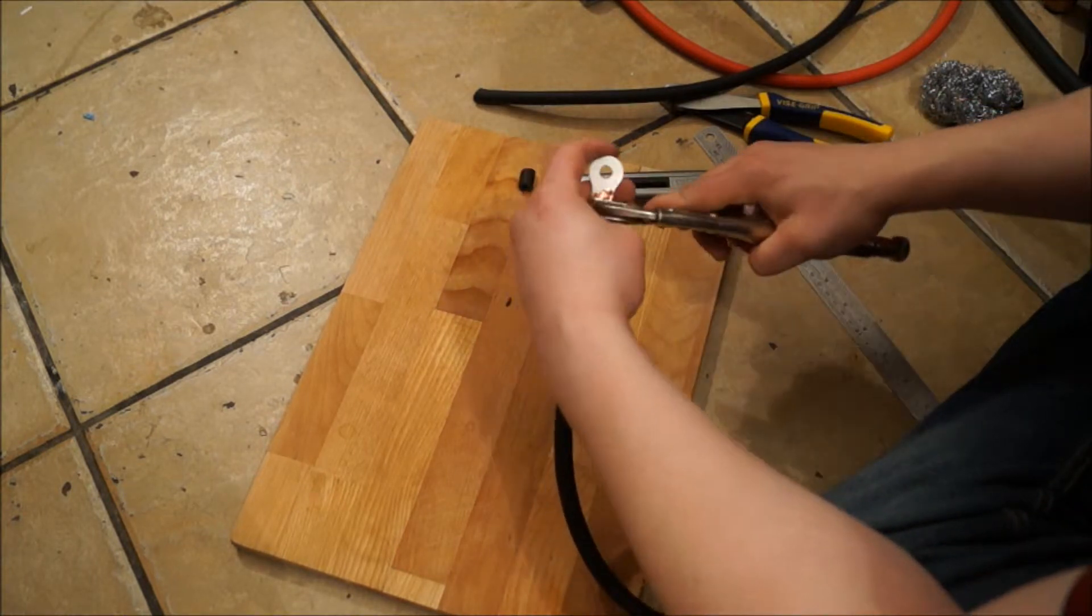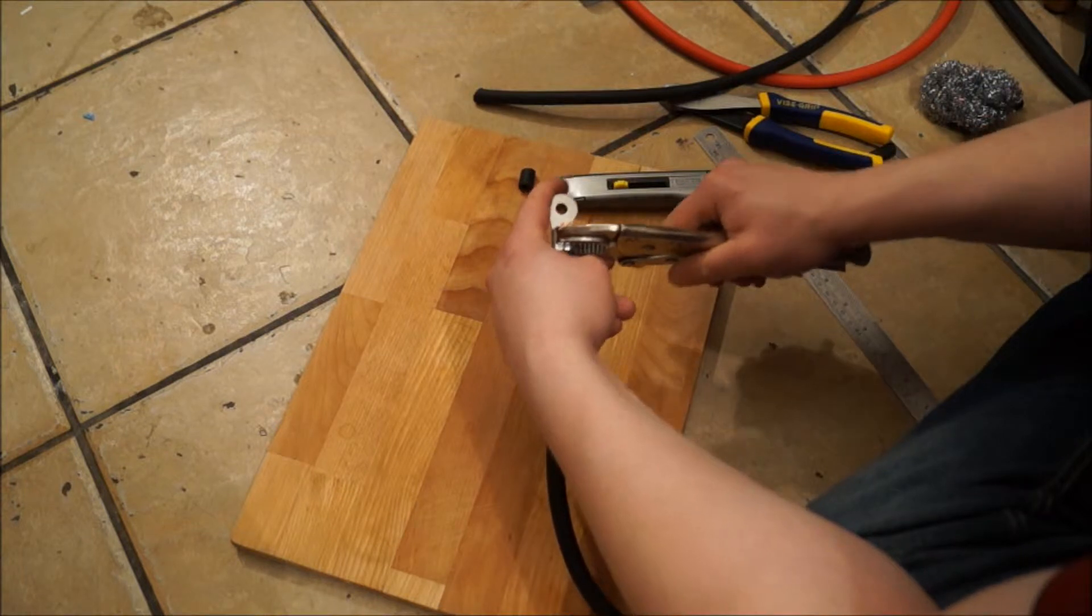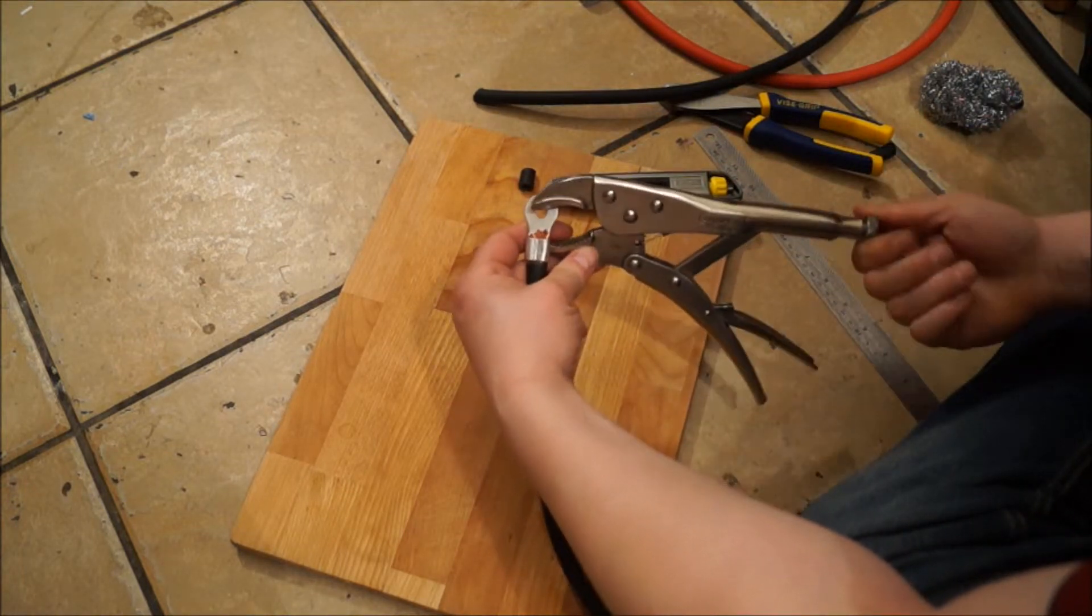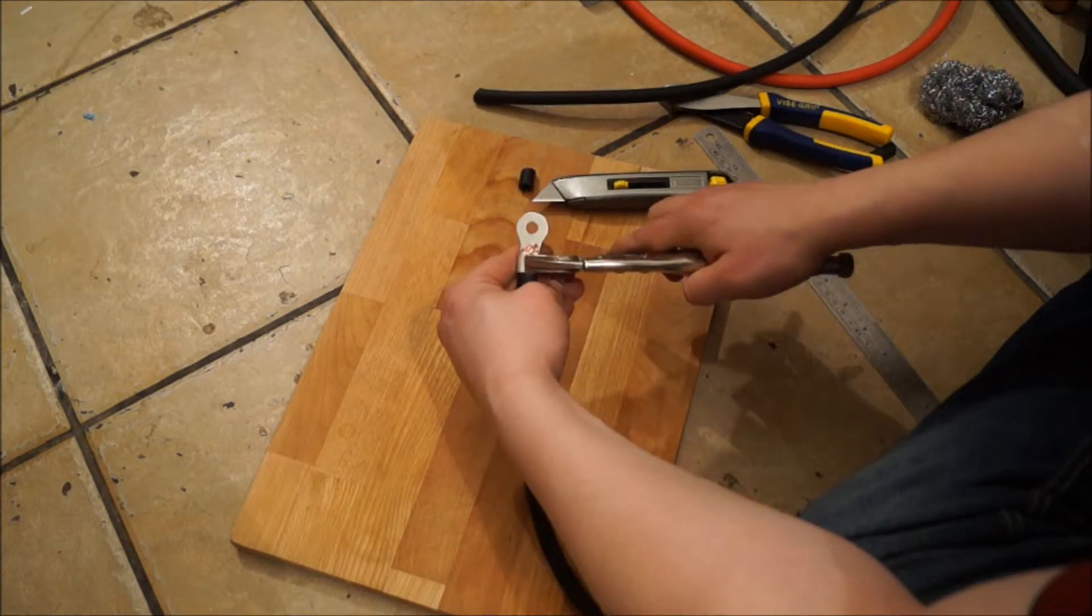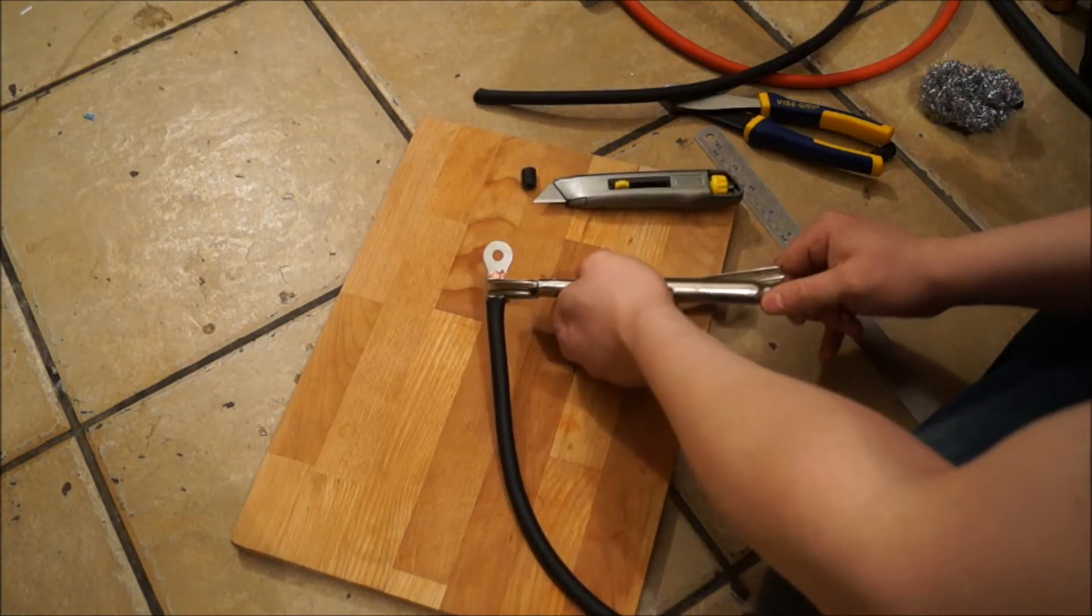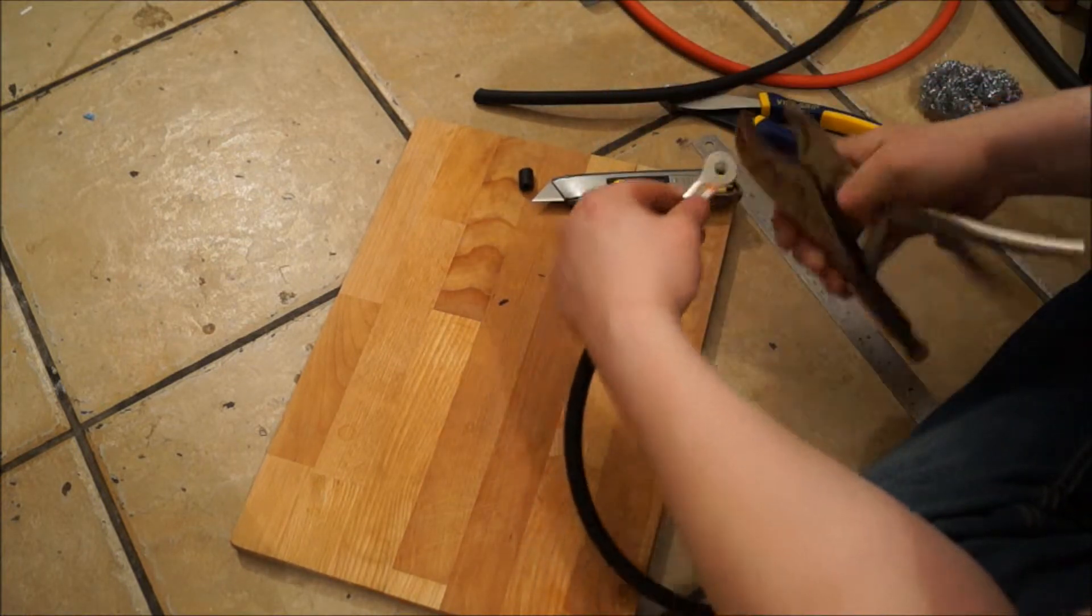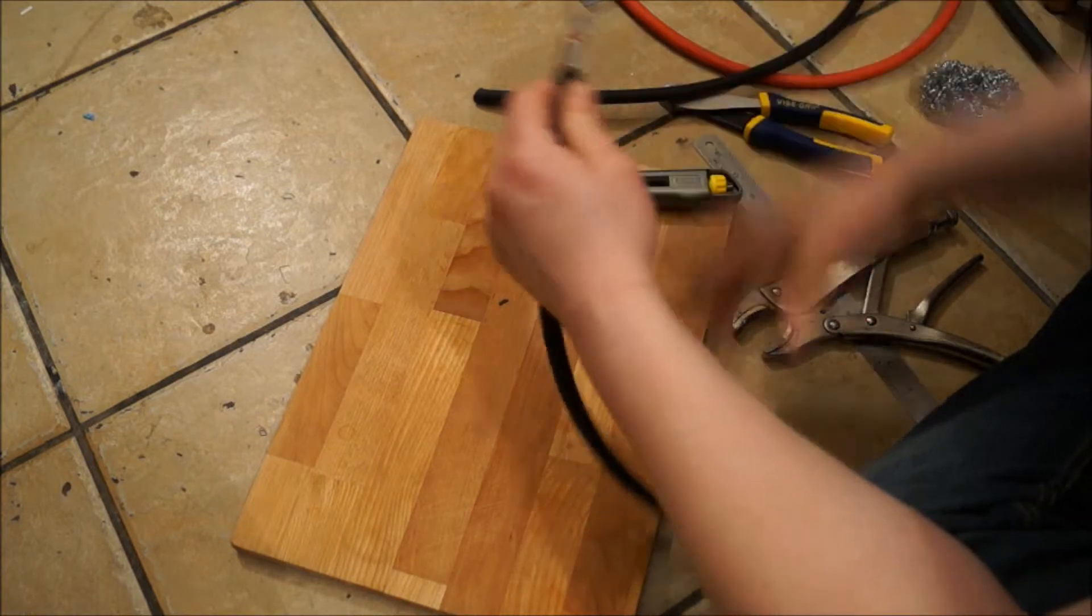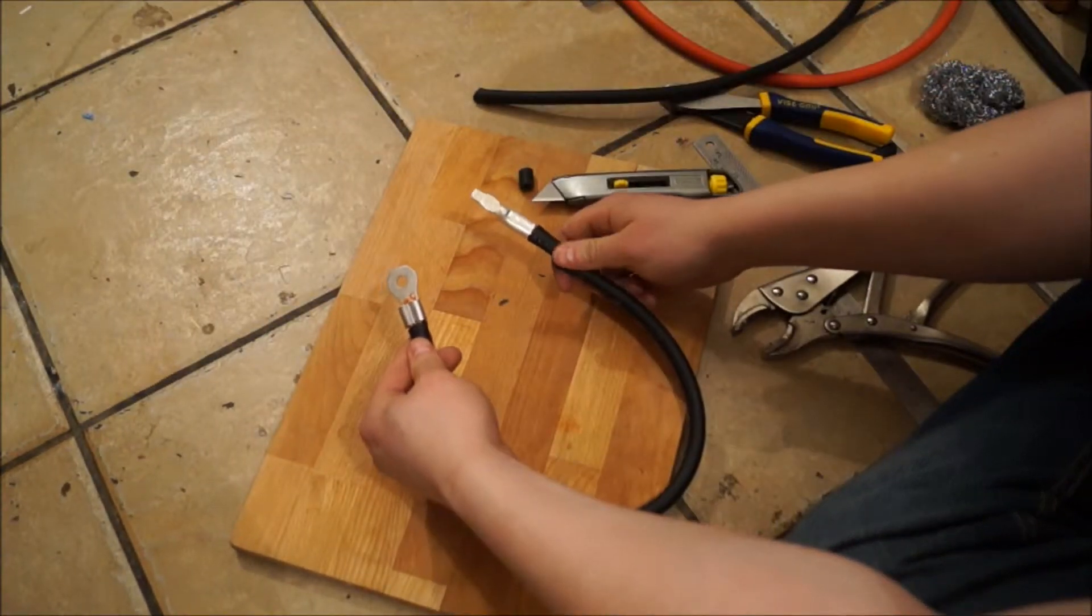So it doesn't have to be perfect looking because all this will be covered using heat shrink tubing a little later on. But like I say, very straightforward. That job's solid as anything, going nowhere. Yeah, and there you go.